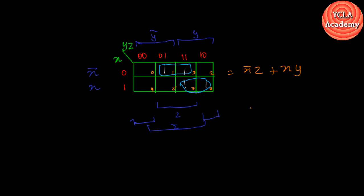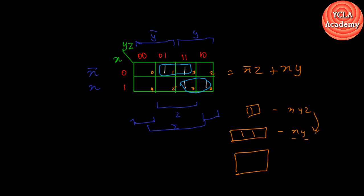Looking at y — this is y. This is the visualization. We have one variable, that is x or y. We have two variables. Similarly, if we are grouping into four, we have one variable. If we group four cells, we have one value. For example, y, x, z. There are different possible groupings.